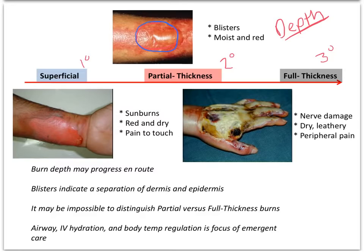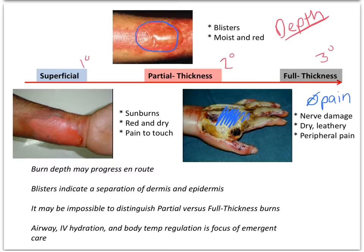Full thickness, as you can see, is a lot more dramatic. There's a lot more tissue involved, a lot more damage involved. In fact, at the point of injury, they may not be complaining of pain — so they may not feel any pain at the point of injury. The patient's skin may be dry and leathery, and they may complain of peripheral pain rather than central pain. Central pain is generally where the location of the injury occurs. Basically what has happened is the burn is so deep that it's actually damaged the nerves, so they couldn't feel it even if they wanted to.